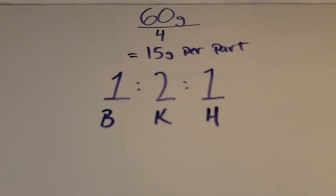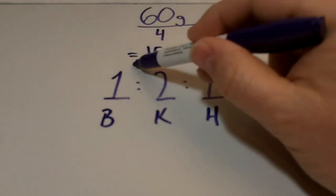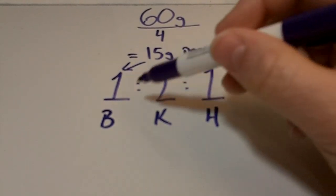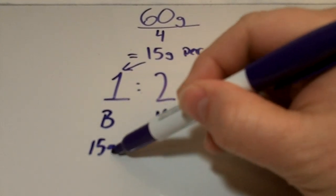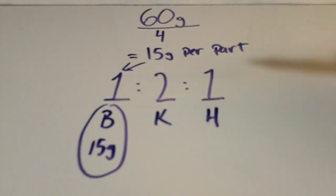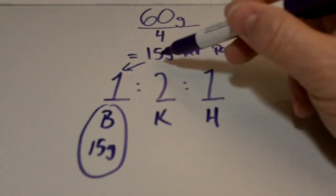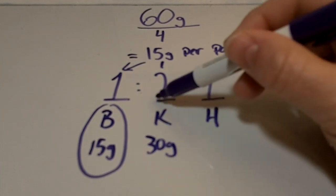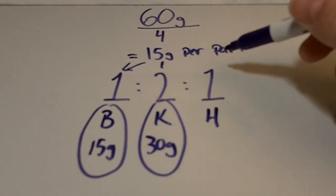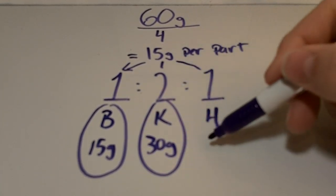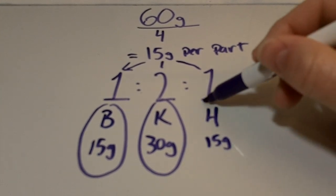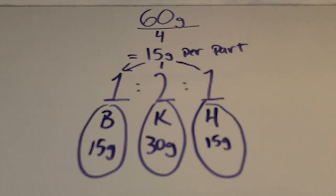And then after that, now that we know how much is in each part, we can distribute it through our ratio. So 15 times one is 15 grams of betamethasone. 15 times two is 30 grams of ketoconazole. 15 times one is 15 grams of hydrocortisone.